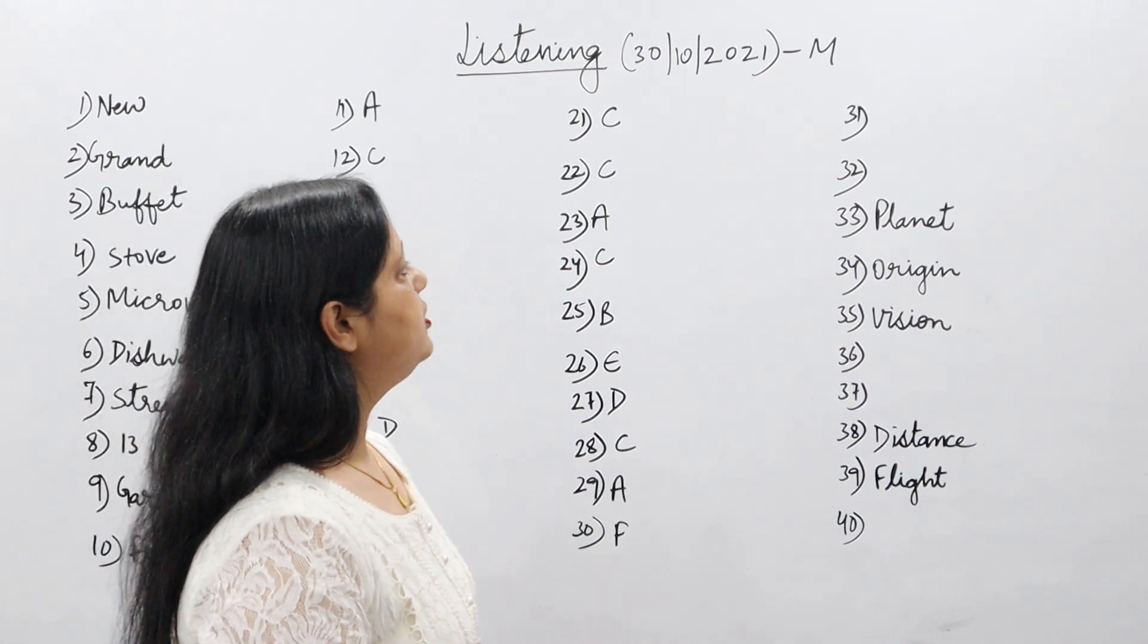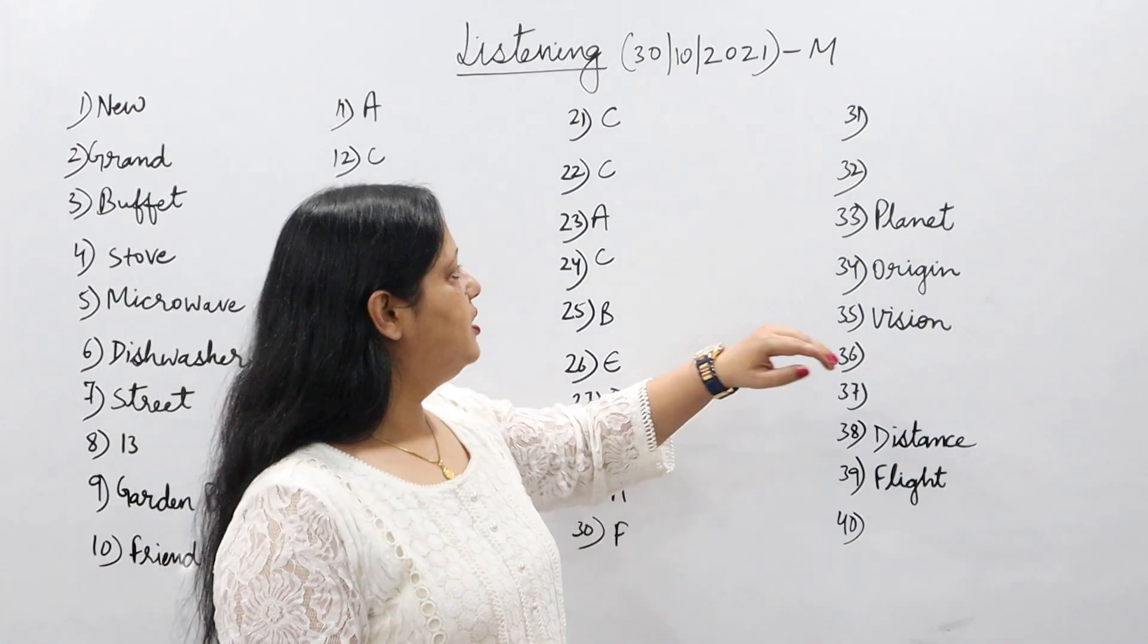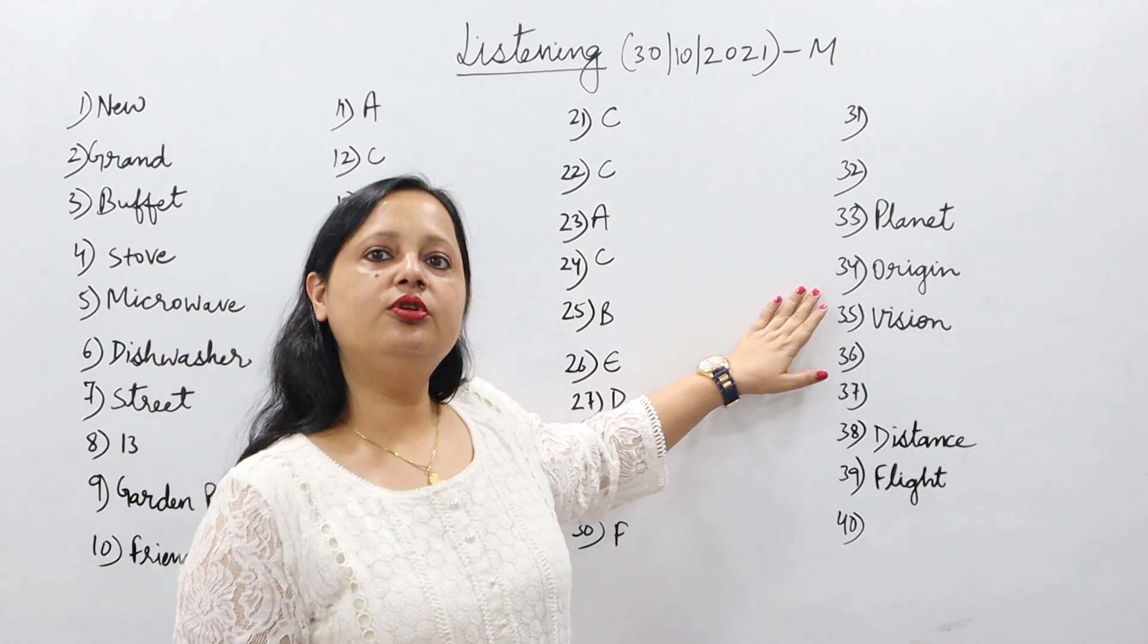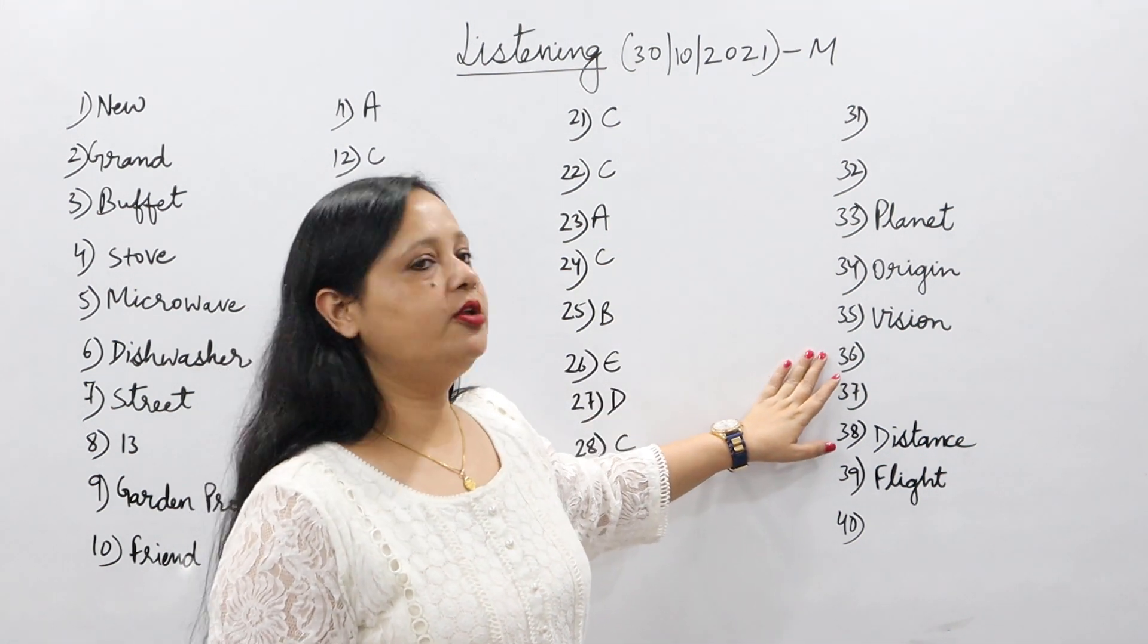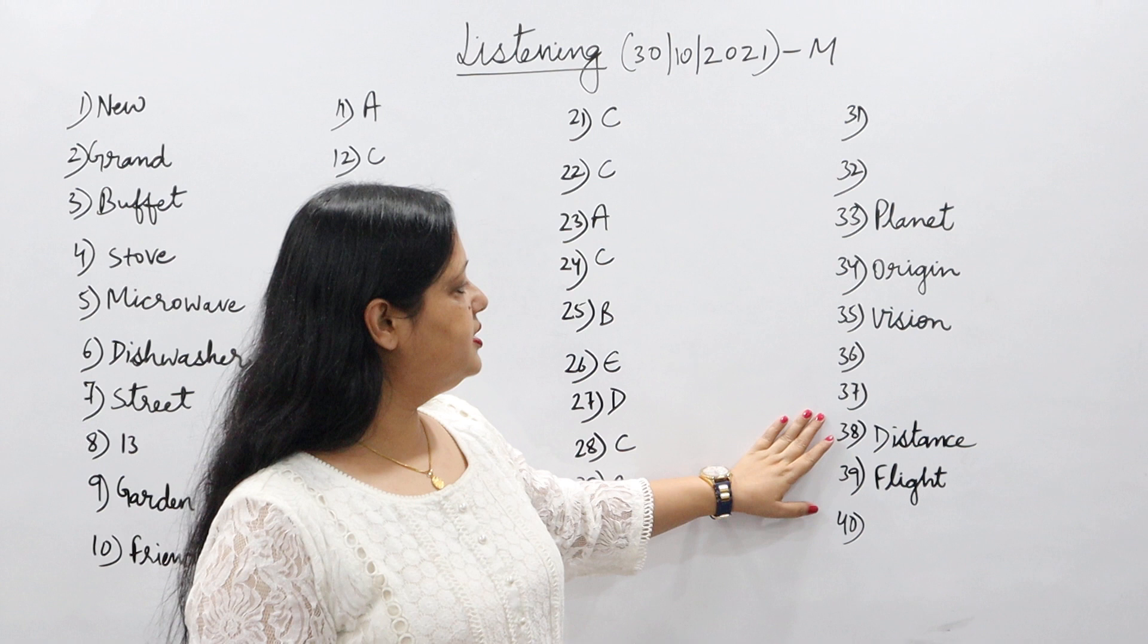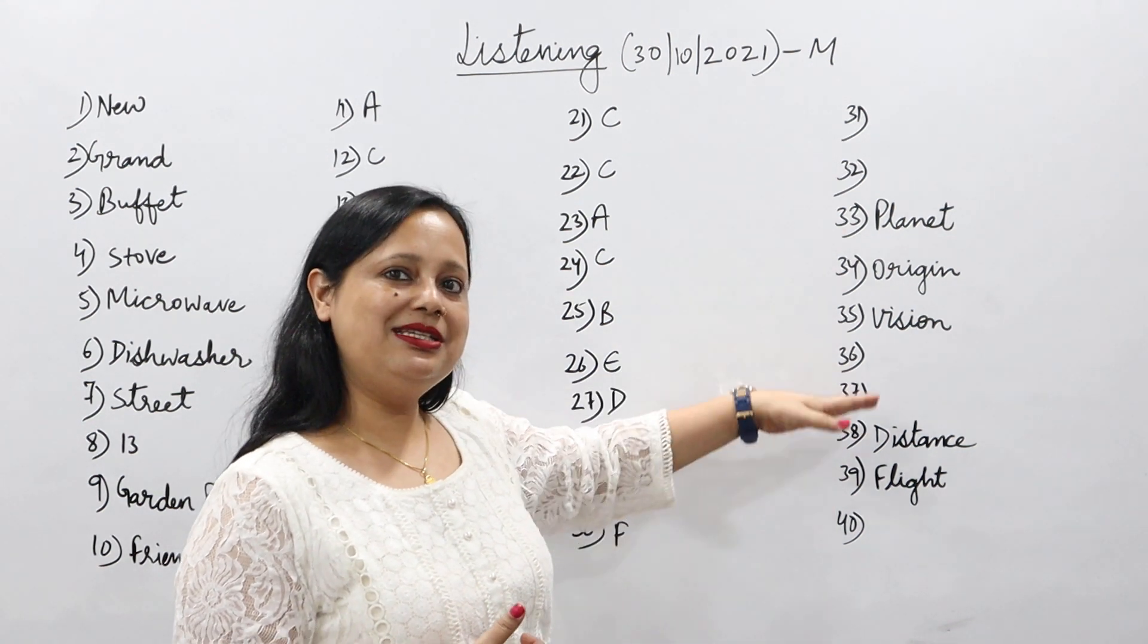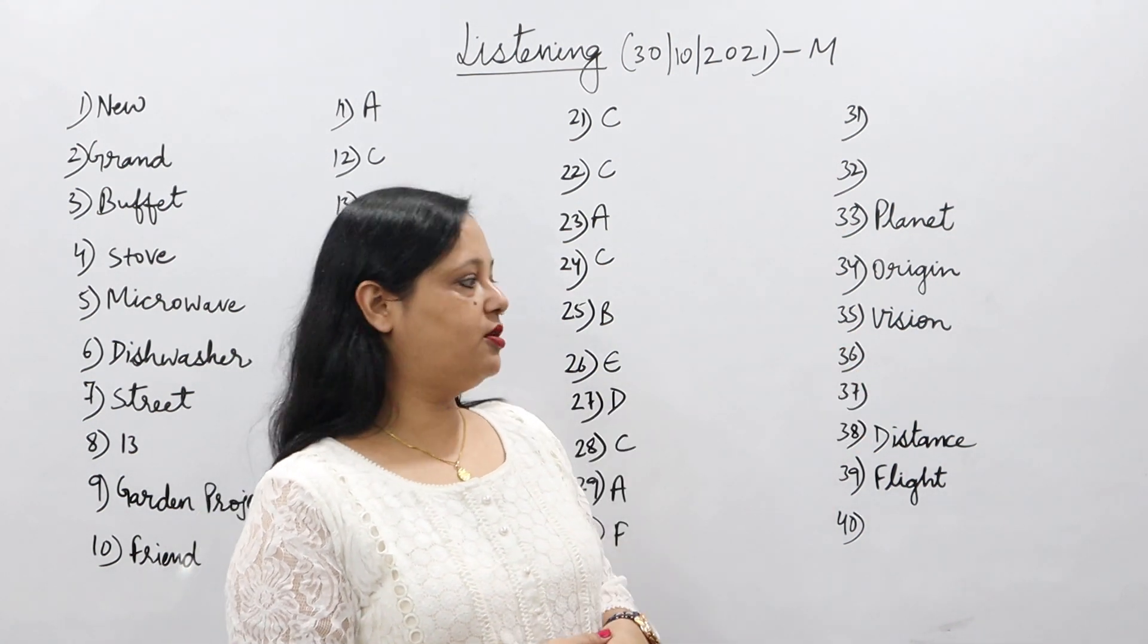Part 4: thirty-first and thirty-second are not available. Thirty-third planet, thirty-fourth origin, thirty-fifth reason, thirty-sixth and thirty-seventh are not available. If you remember these answers, kindly write it down there in the comment section.